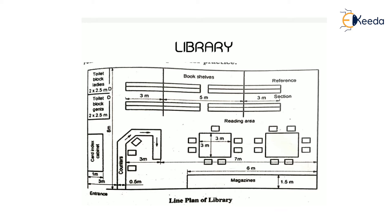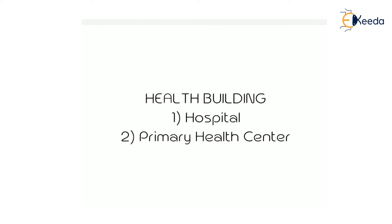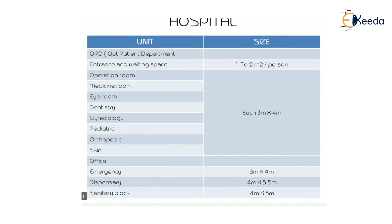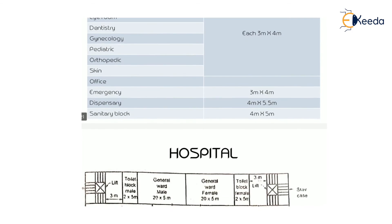The next building type is the health building, which includes hospital and primary health center. The units of hospitals are: OPD (outpatient department), entrance and waiting space with a size of 1 to 2m² per person, operation area, medicine area, eye room — each of size 3m×4m — emergency room at 3m×4m, dispensary room at 4m×5.5m, and sanitary block at 4m×4.5m.